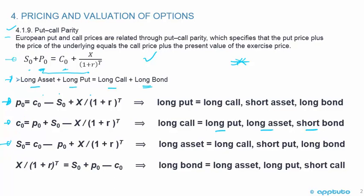It becomes a bit of a word game, as you'll see in the practice questions. Being long the asset is equivalent to being long the call, short the put, and long the bond. Move P0 to the other side and you're long the call, long the bond, but short the put.